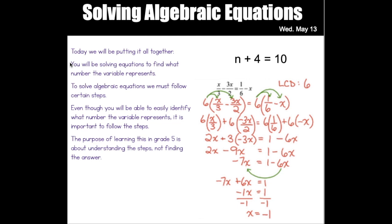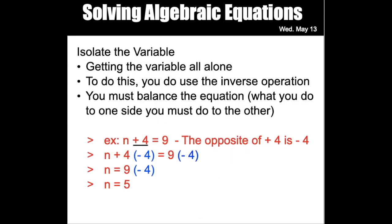Today we are going to learn the last and final term of solving algebraic equations. It is called isolating the variable. In order to solve algebraic equations you have to isolate the variable, which essentially means to get the variable all alone on one side of the equation. To do this we have to combine the two terms we learned this week: we have to do the inverse operation and then balance the equation.